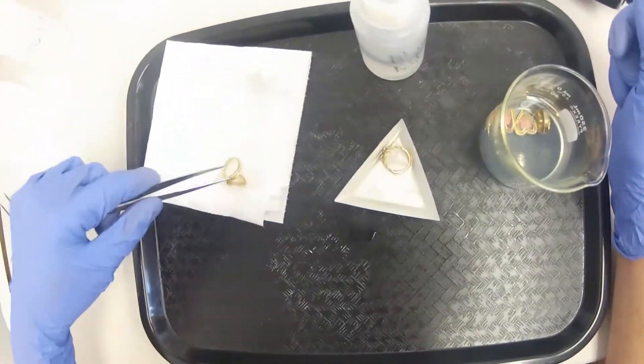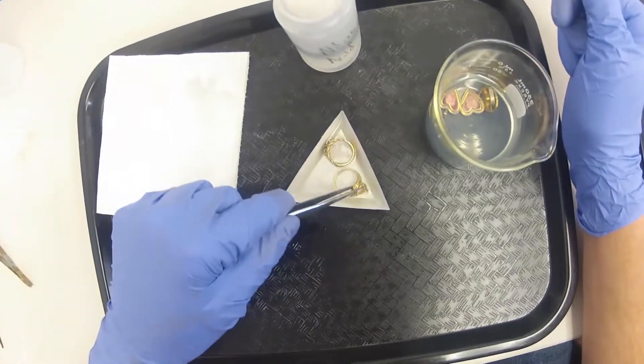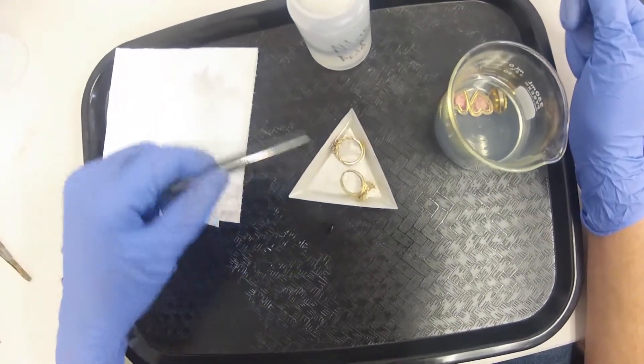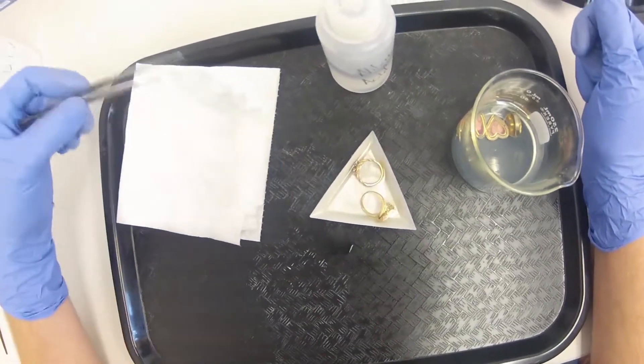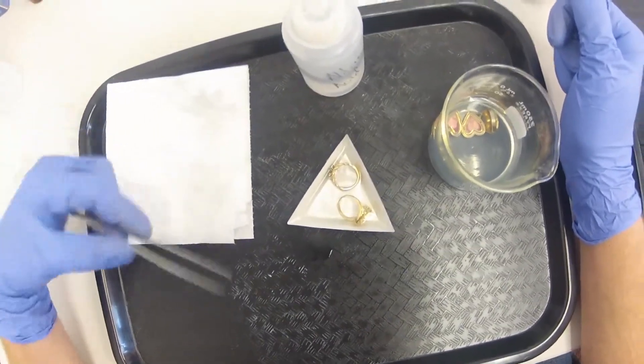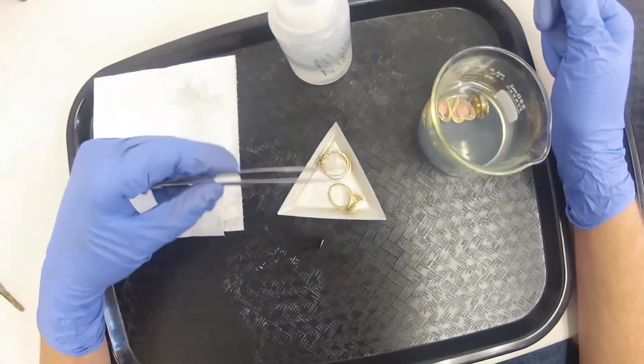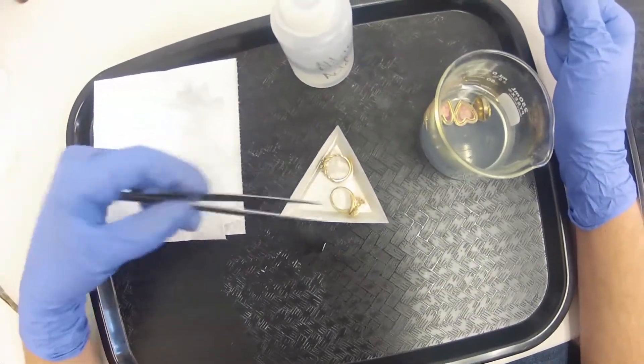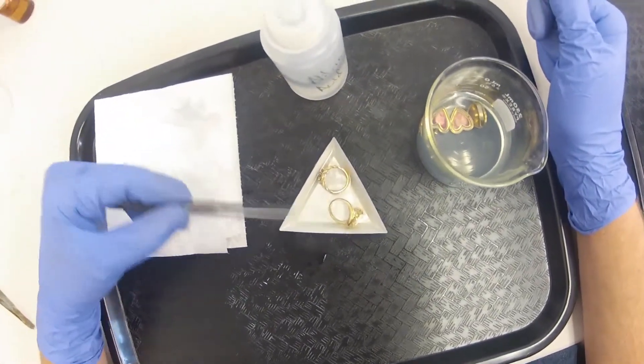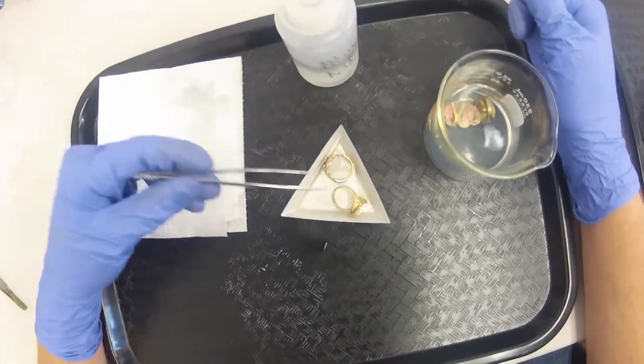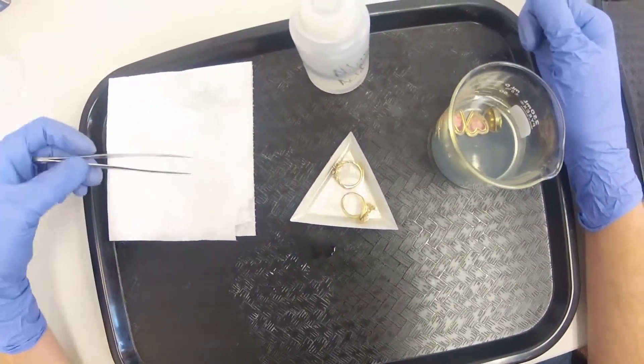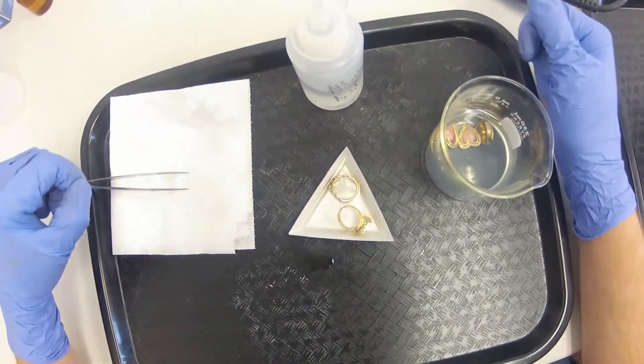So gold is non-reactive to nitric acid, but the base metals that the gold are alloyed with, each piece here, they're actually alloyed with base metals like copper. So the copper is reactive, and even though it's alloyed with the gold, it is just very slowly reactive now. And we'll come back in a few minutes and I'll show you the difference between the 10 karat and the 14 karat.